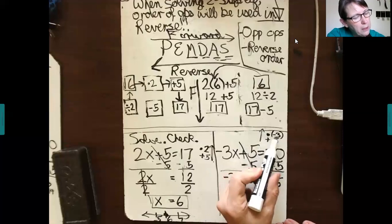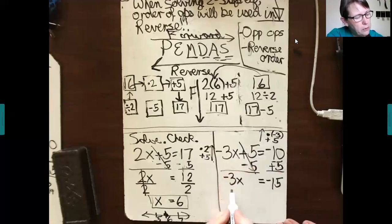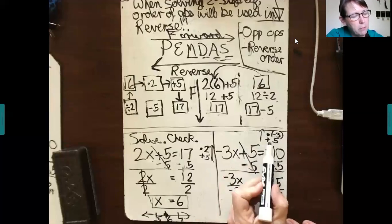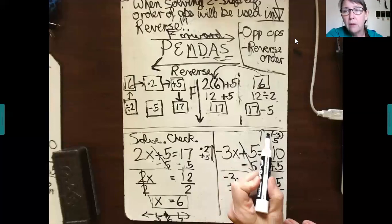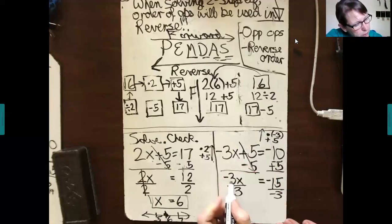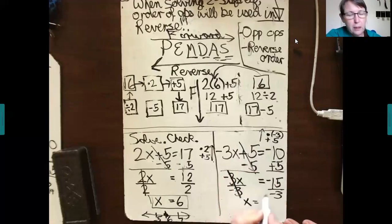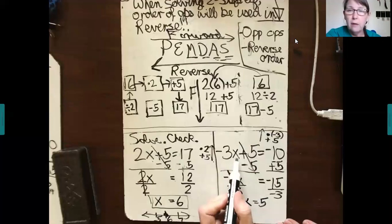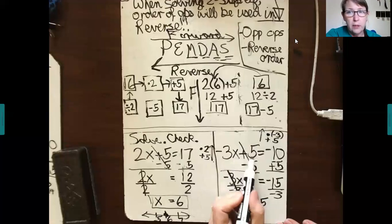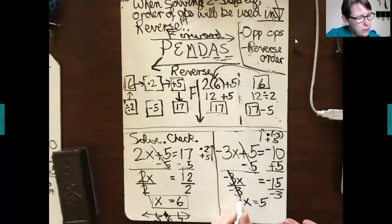Now instead of multiplying each side by negative 3, I'm going to divide each side. Why am I dividing? Because the opposite of multiplication is division. Anything over itself is 1. 1 times x is x. Negative 15 divided by negative 3 is 5. Let's try it out. Negative 3 times 5 is negative 15. Negative 15 plus 5 is negative 10. So this is the correct solution. You can also show your solution on the number line.